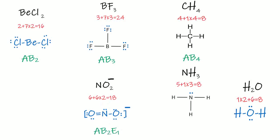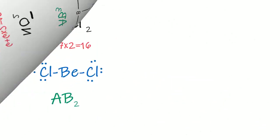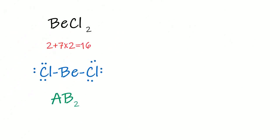So similarly, what is the type of the ammonia molecule? It is AB₃E₁. And the water molecule? It is AB₂E₂.